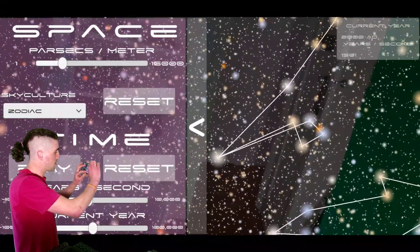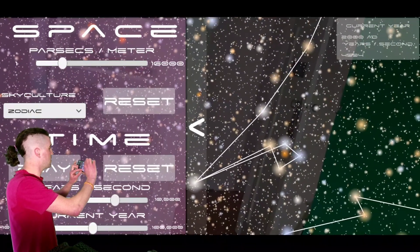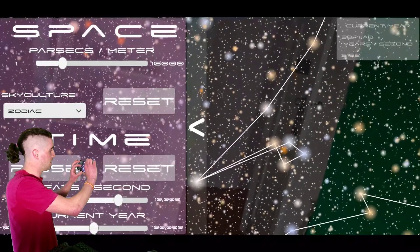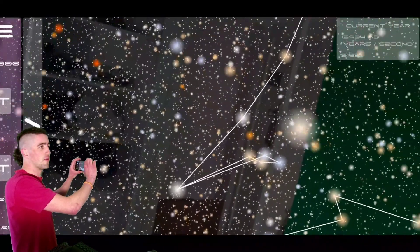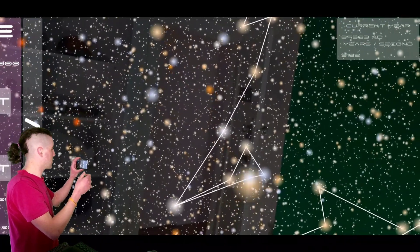So, for example, if I go ahead and change these years per second to about 5,000 years per second. And I hit play. We're going to see, slowly, how our galaxy will change over time.